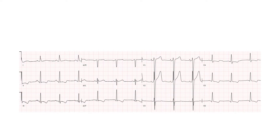So this is an ECG. If we can appreciate, we can see a few leads over here and there are some changes that are very obvious. I will give you a few seconds to have a look, and then we can discuss further. First of all, let's start with the rhythm — the patient is having sinus rhythm because every P wave is followed by a QRS complex.